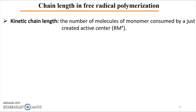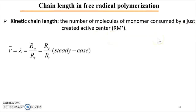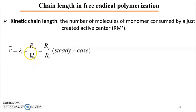The last point we need to know about radical polymerization is the chain length of polymer chains, which is the live length of propagating active chains during polymerization. It is defined as the number of molecules of monomer consumed by a just-created active center. The kinetic chain length, lambda or nu, is the rate of propagation — the rate of consumption of monomer by each created active center.